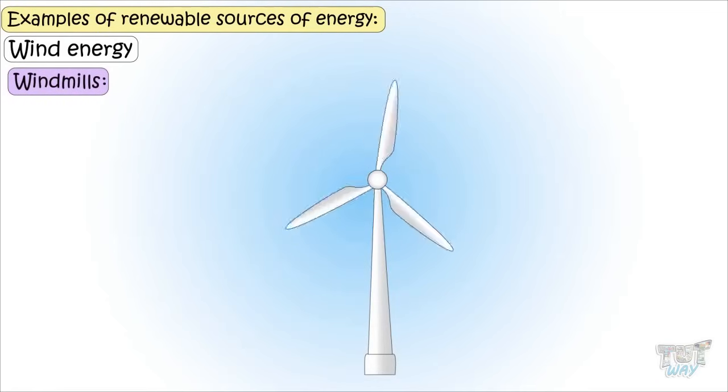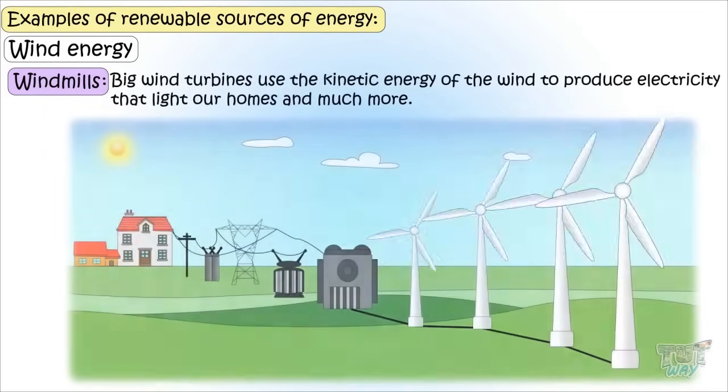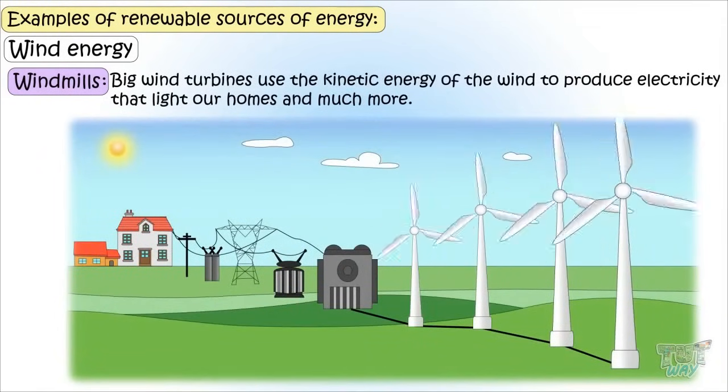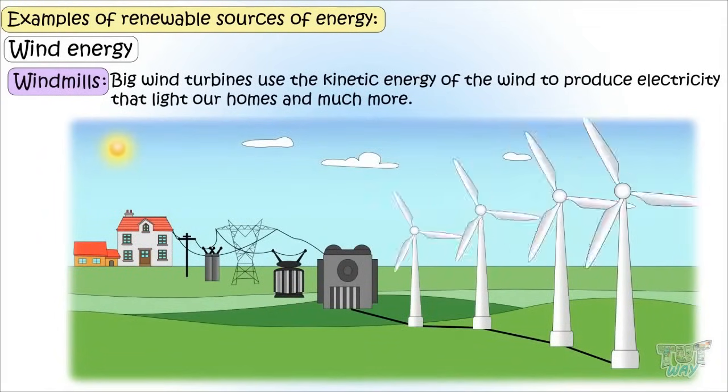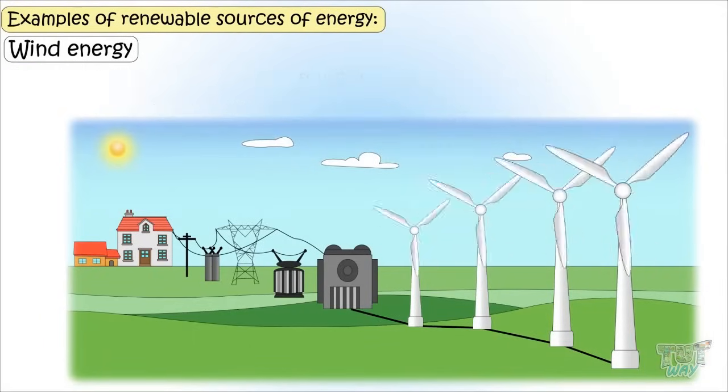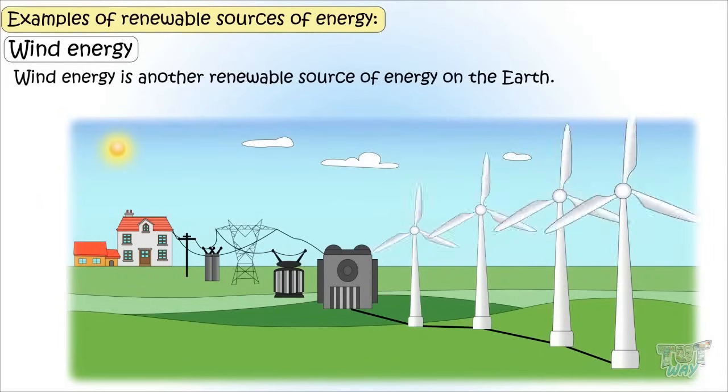Wind energy is trapped to serve various purposes. Windmills use the kinetic energy of the wind to pump the underground water and to grind grain. And big wind turbines use the kinetic energy of the wind to produce electricity that lights our homes and much more. So wind energy is another renewable source of energy on Earth.